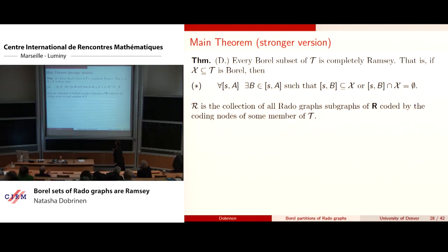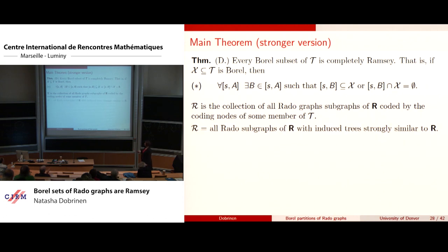Script R is the collection of all Rado graphs which are subgraphs of the original layout of the Rado graph — coded by coding nodes of some member of this tree — making a correspondence between the trees and the original question of subgraphs of the Rado graph. Reinterpreted, script R is the set of all Rado graphs which are subgraphs of the original one laid out in order type ω, induced by trees strongly similar to the original one.